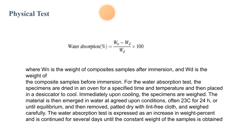For the water absorption test, specimens are dried in an oven for a specified time and temperature, then placed in a desiccator to cool. Immediately upon cooling, the specimens are weighed. The material is then immersed in water at agreed conditions — often 23 degrees for 24 hours or until equilibrium — then removed, patted dry with a lint-free cloth, and weighed carefully. The water absorption test is expressed as an increase in weight percentage and continues for several days until a constant weight of the sample is obtained.